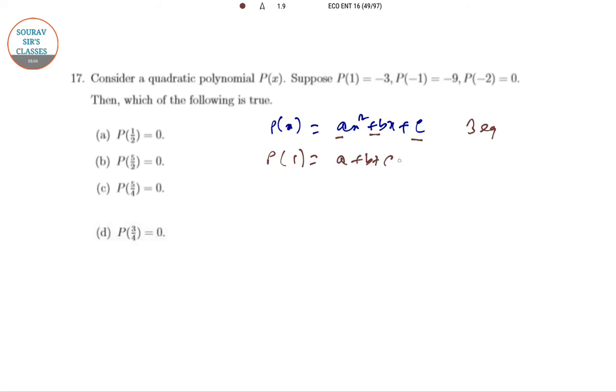So P of 1 is a plus b plus c, and that is equal to minus 3 as it is given. P of minus 1 equal to a minus b plus c, that is minus 9. And P of minus 2 is 4a minus 2b plus c, that is equal to 0.